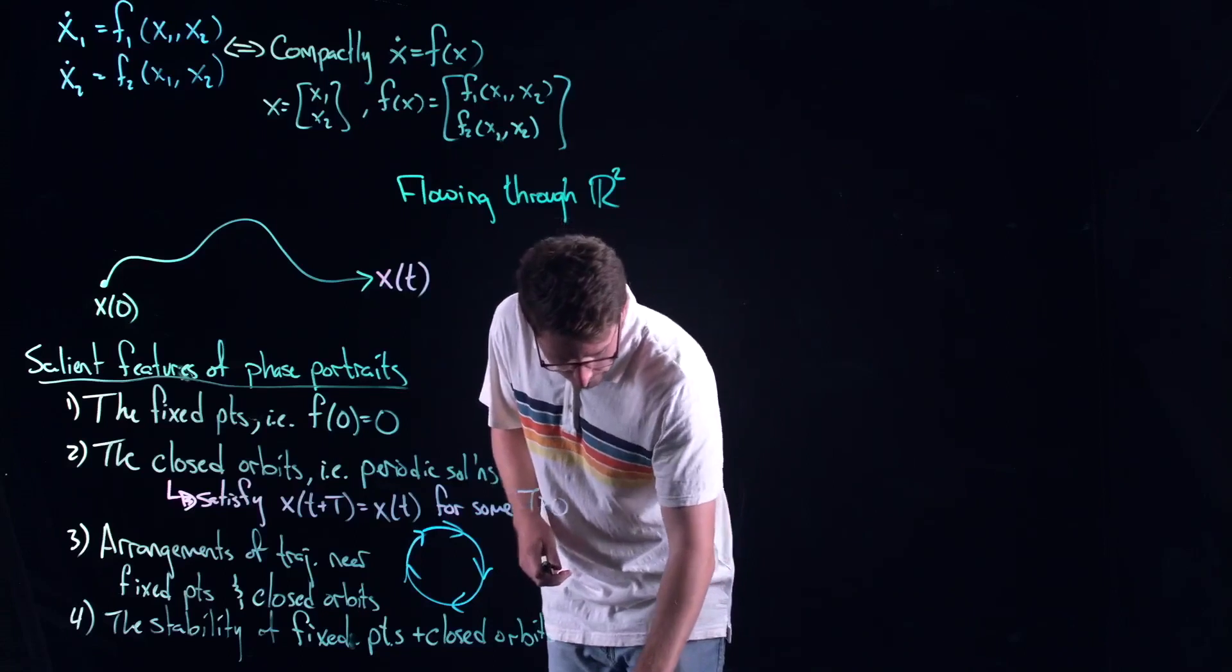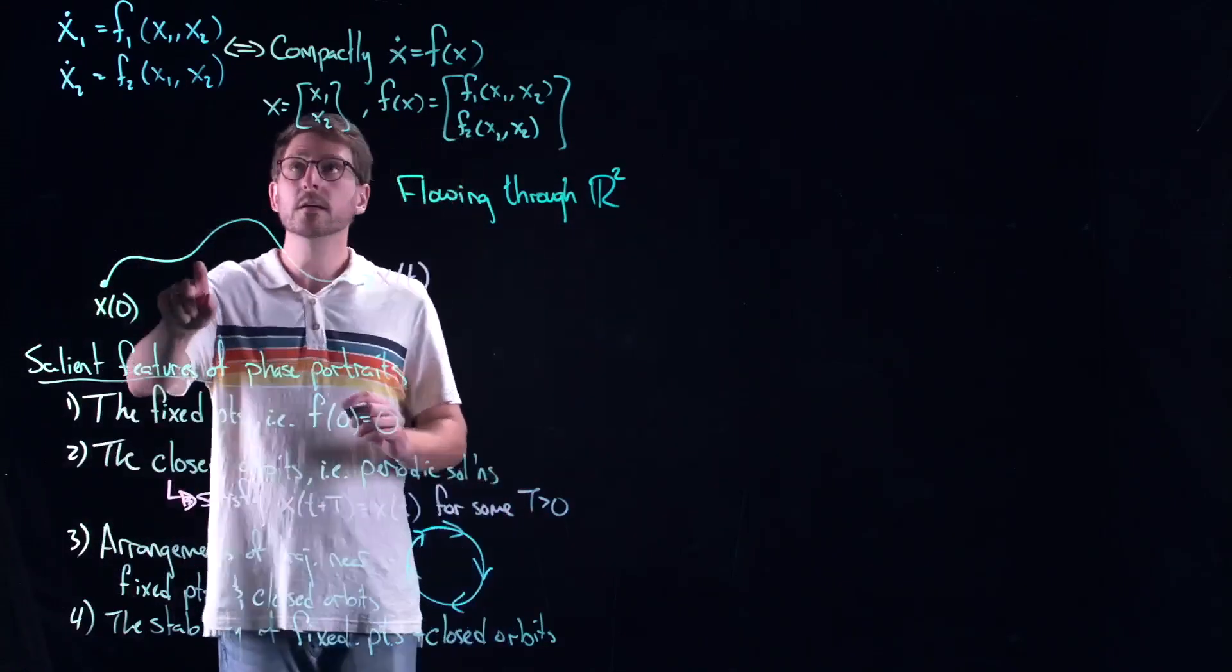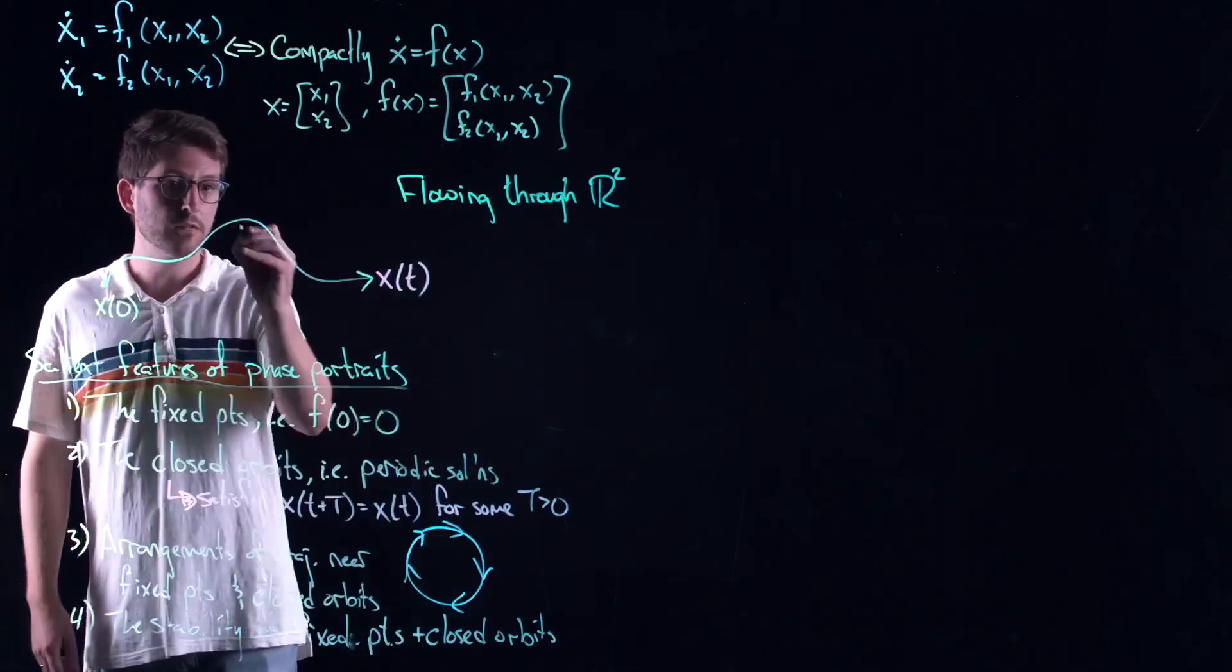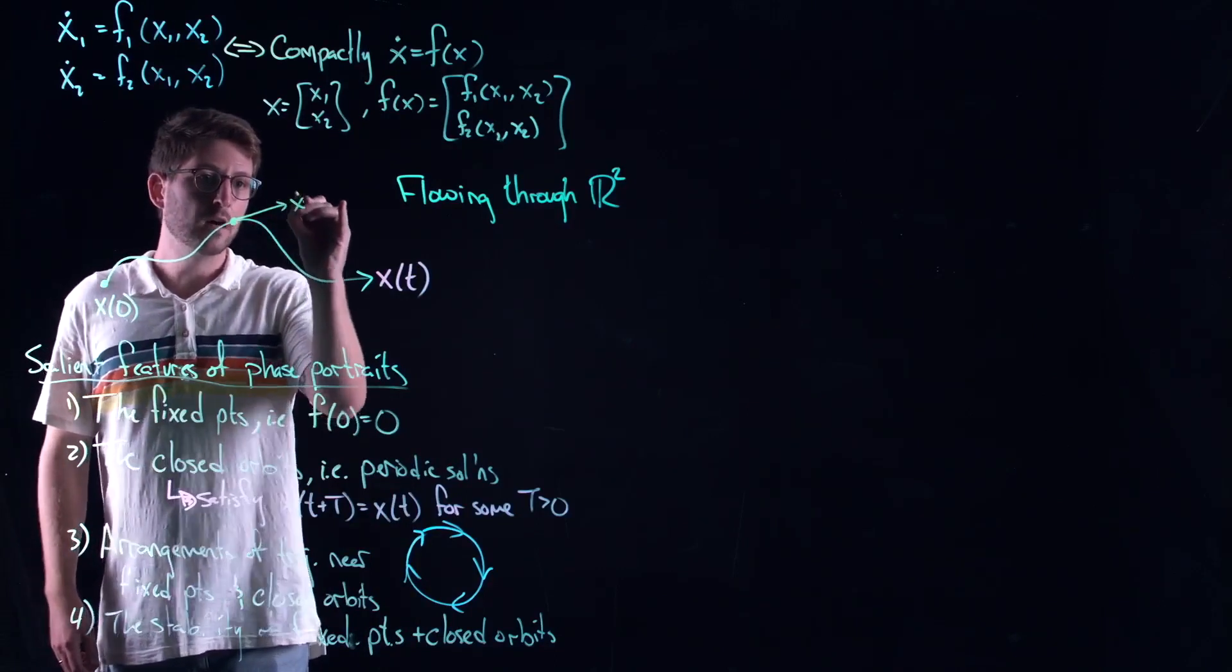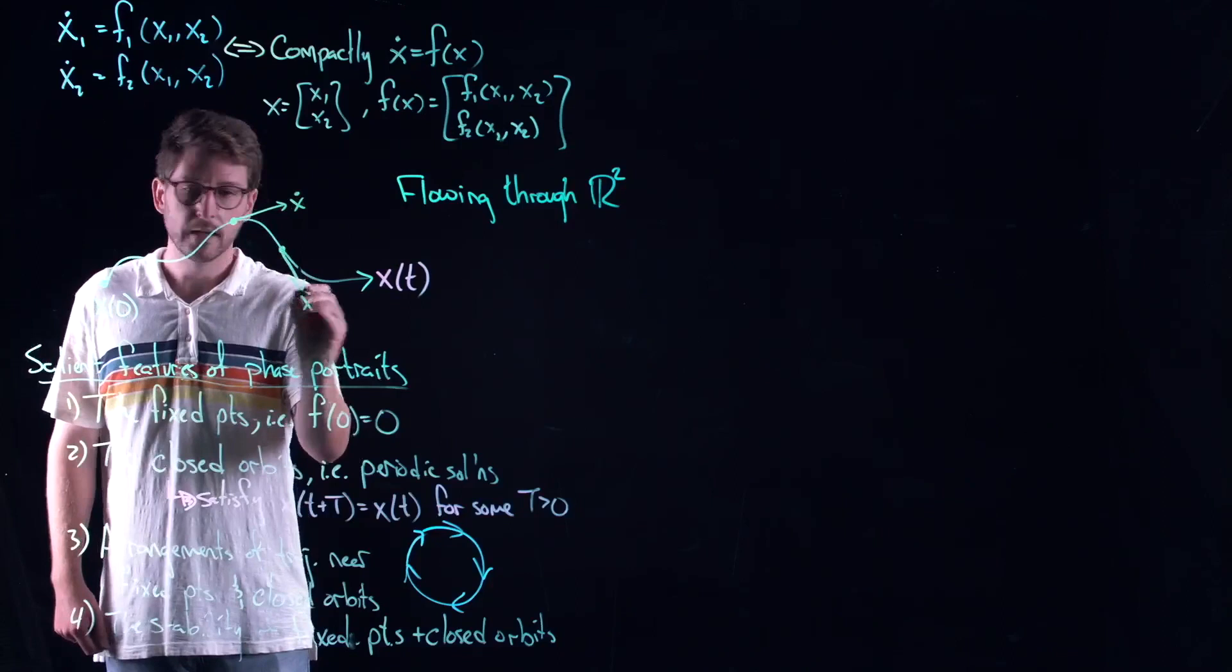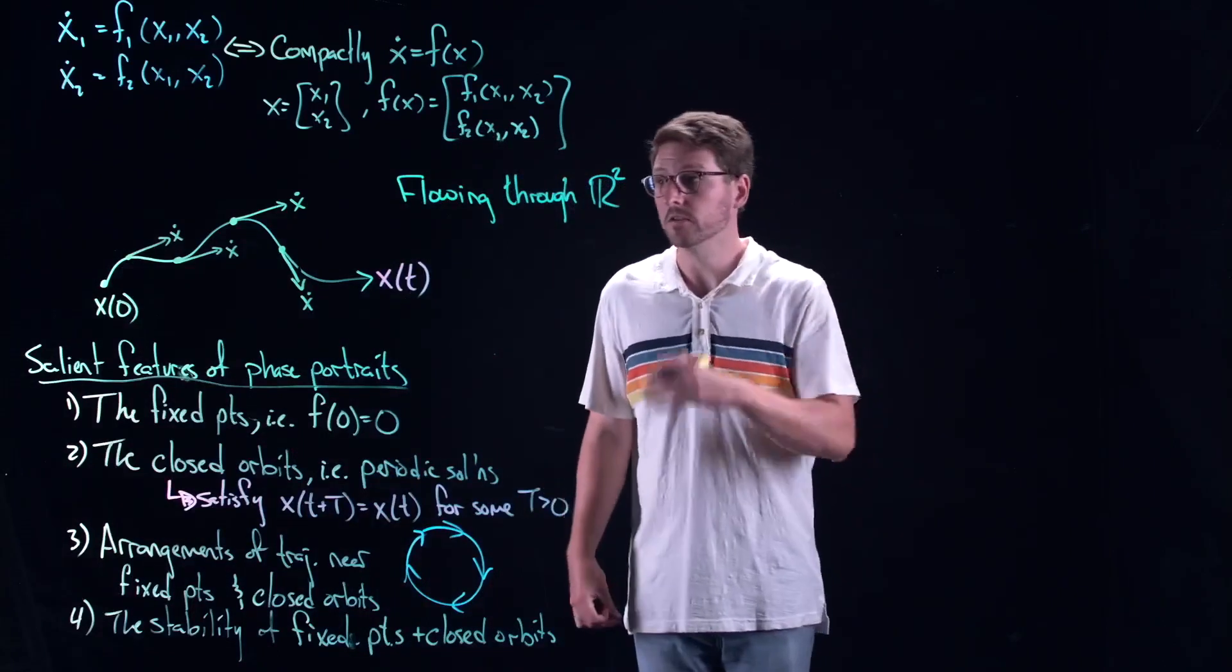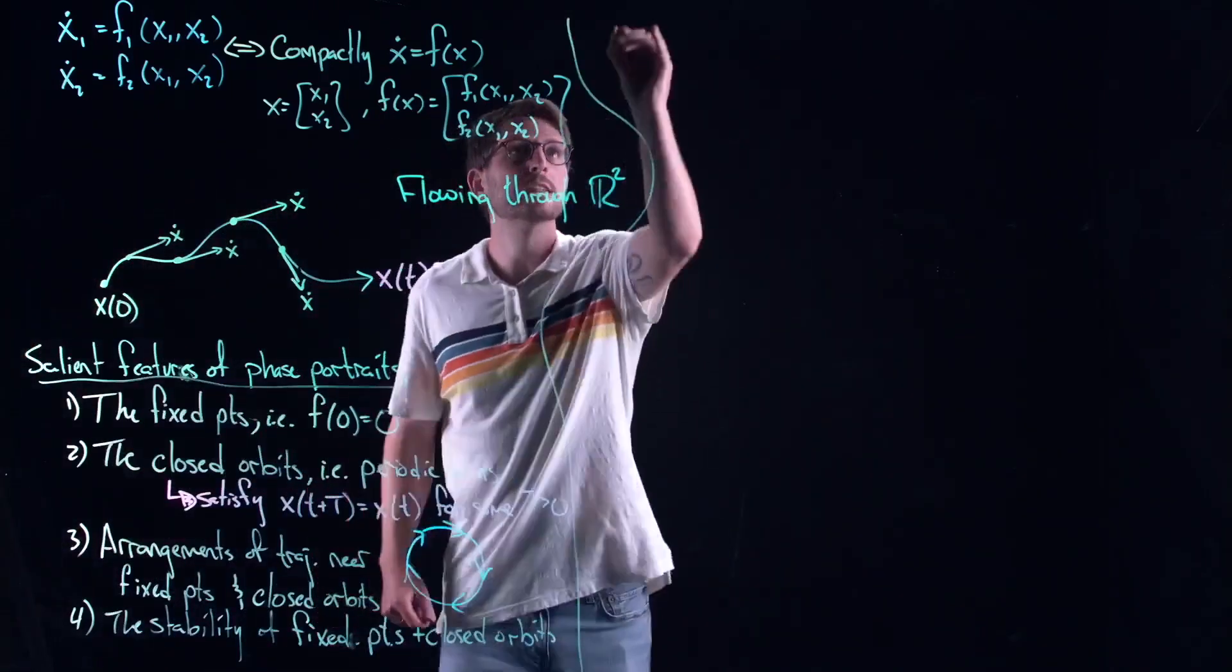The first step towards getting all of this information is sketching out what's called a vector field. We should always interpret this thing as a vector field. It tells us that if we know our position, then we know our velocity. If I have this curve here, then x dot represents the tangent line to that curve.